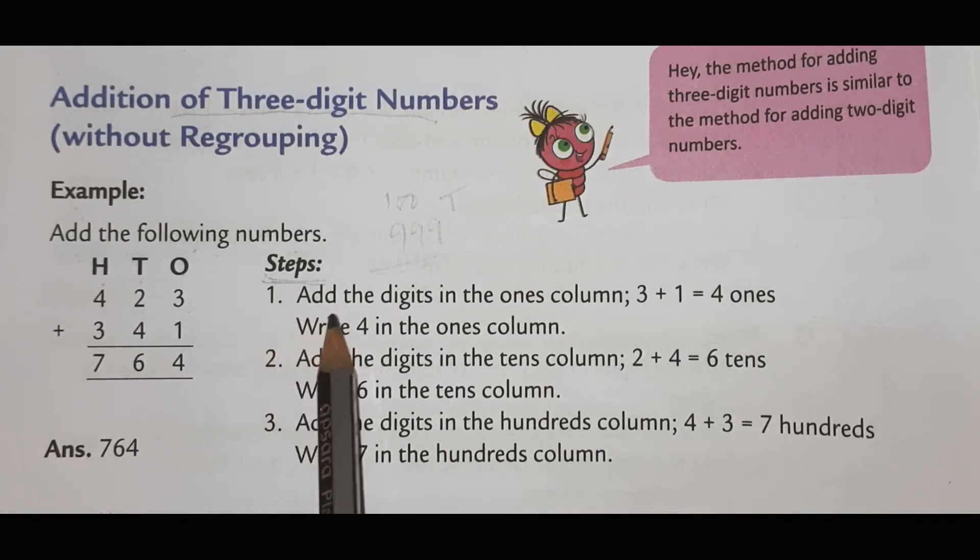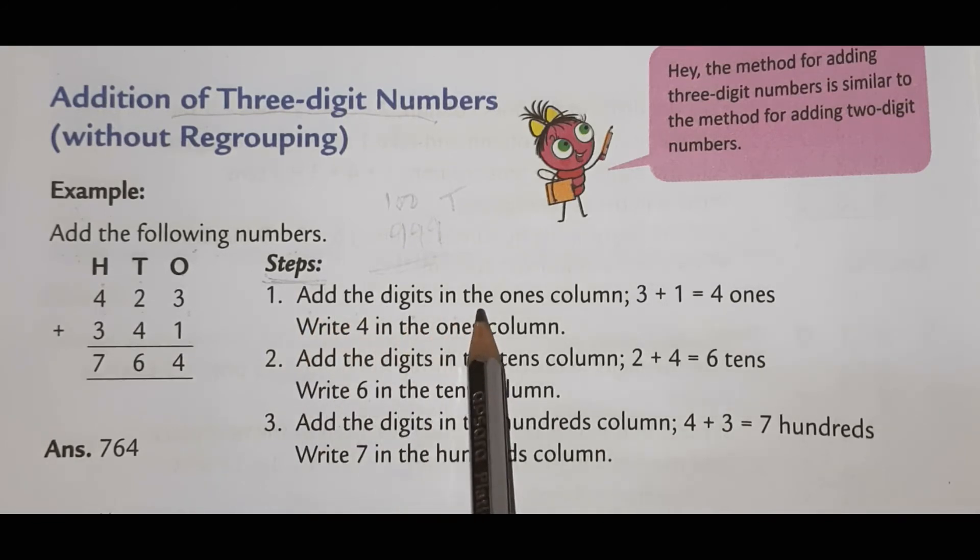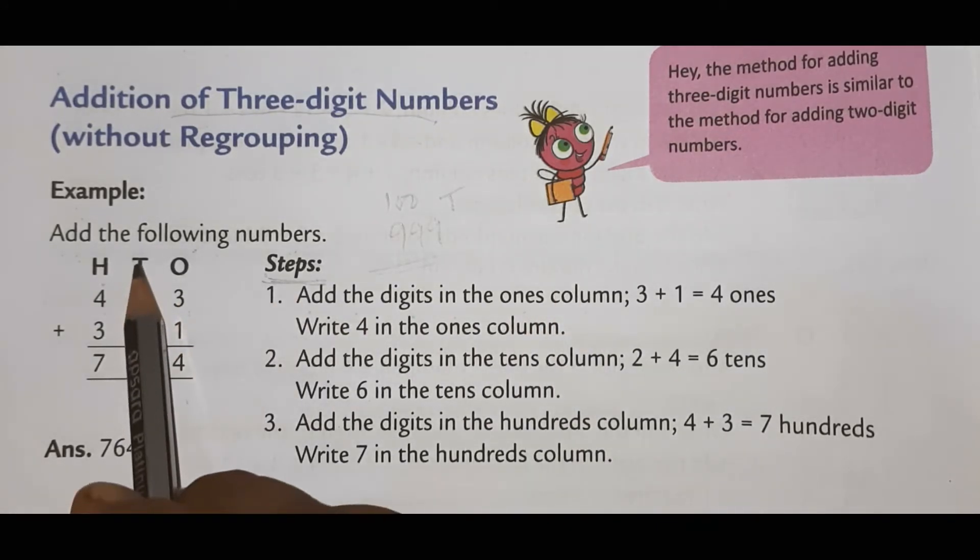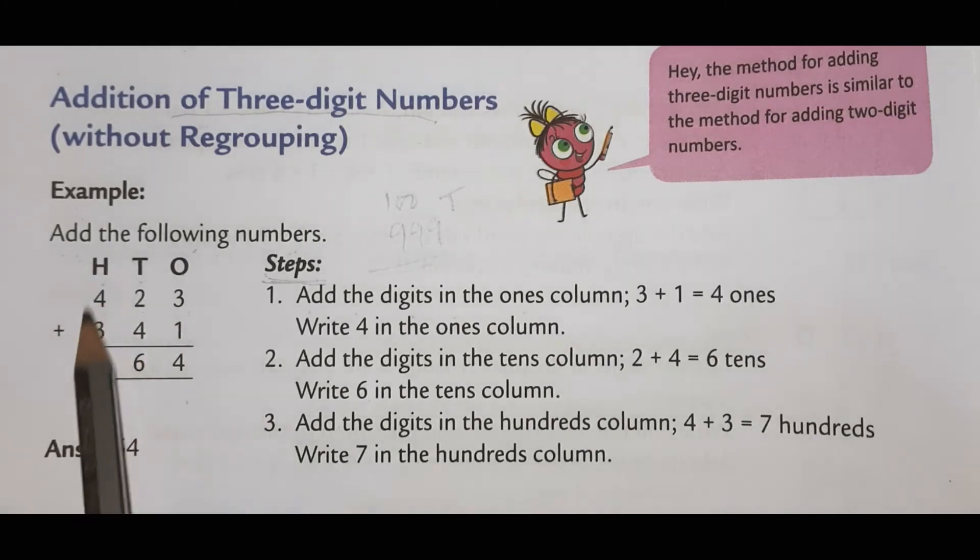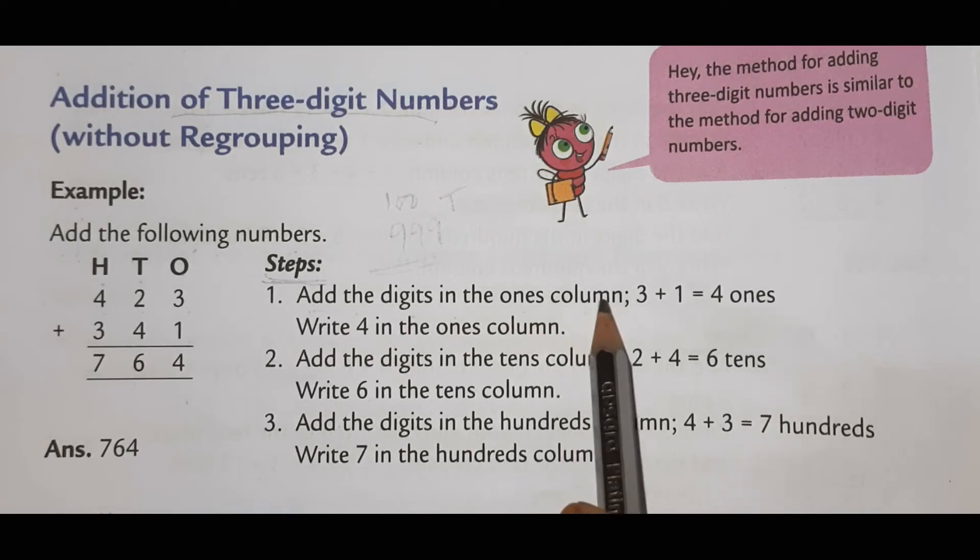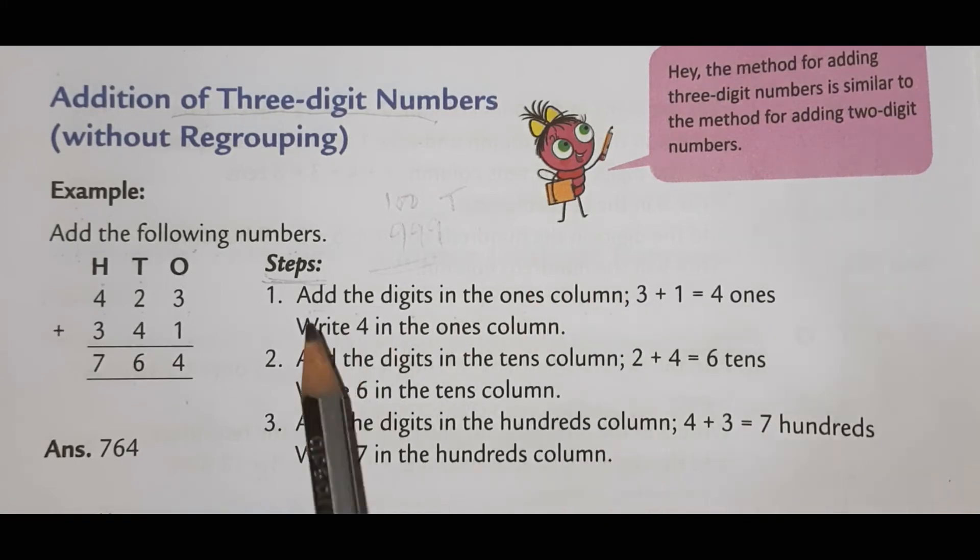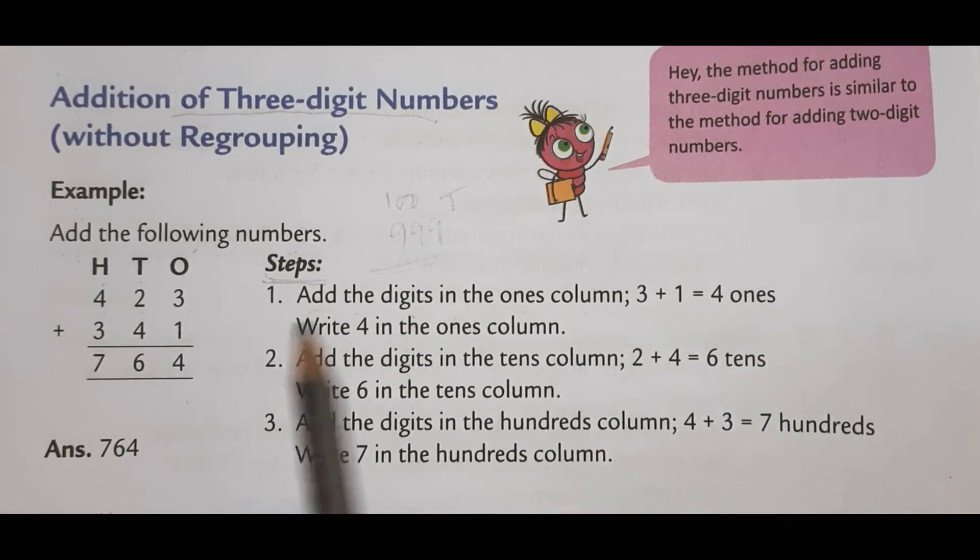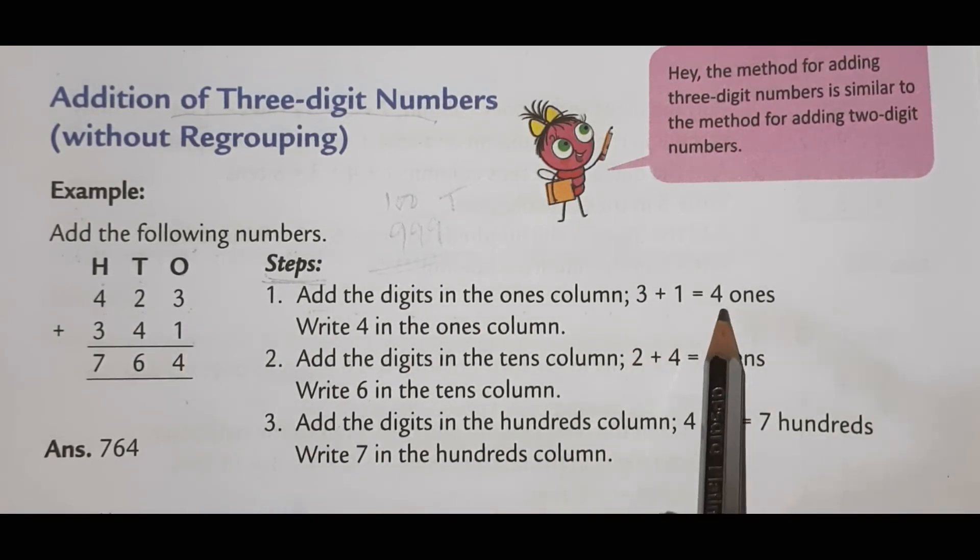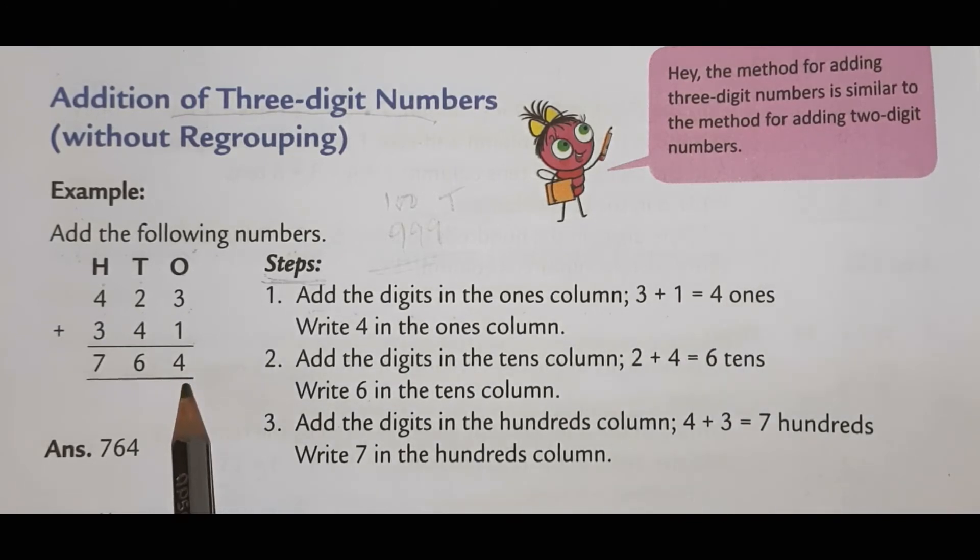Let's add the digits in the one's column. This is one's column. This is ten's column. This is hundred's column. So, add the digit in one's column. Which numbers are there? 3 and 1. See, 3 and 1. So, 3 plus 1, how much? 3 plus 1 equal to 4. So, we will write here 4. Write 4 in the one's column.